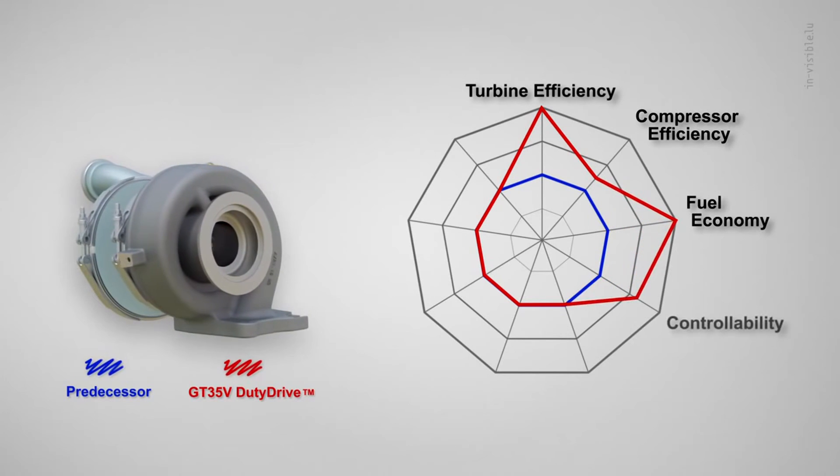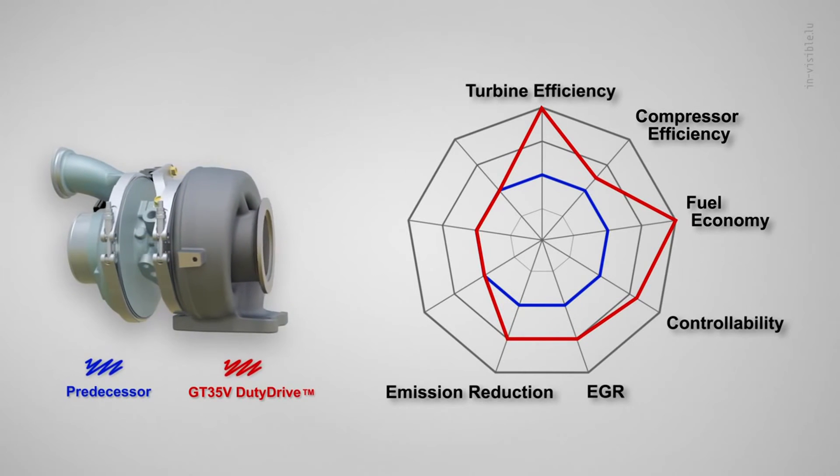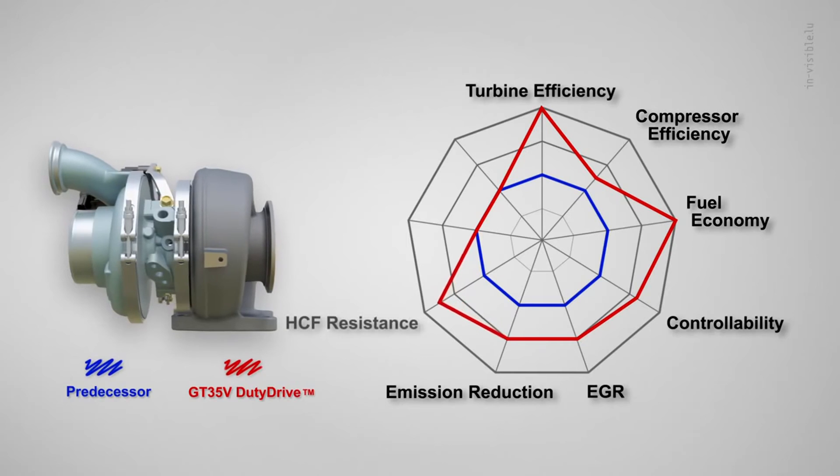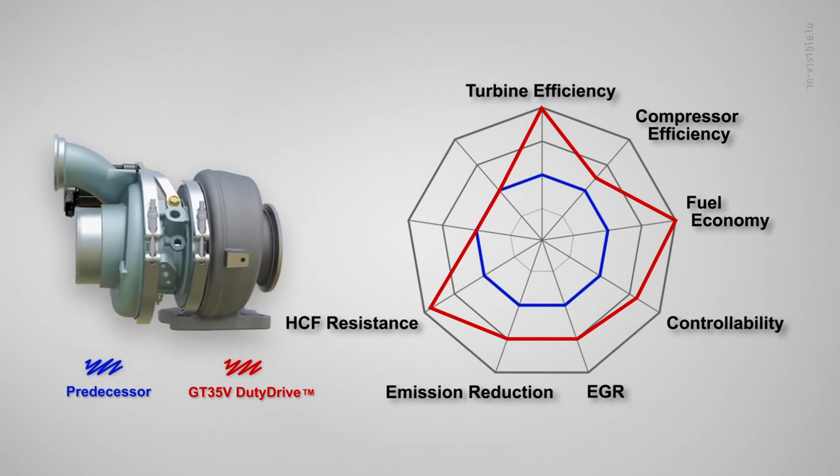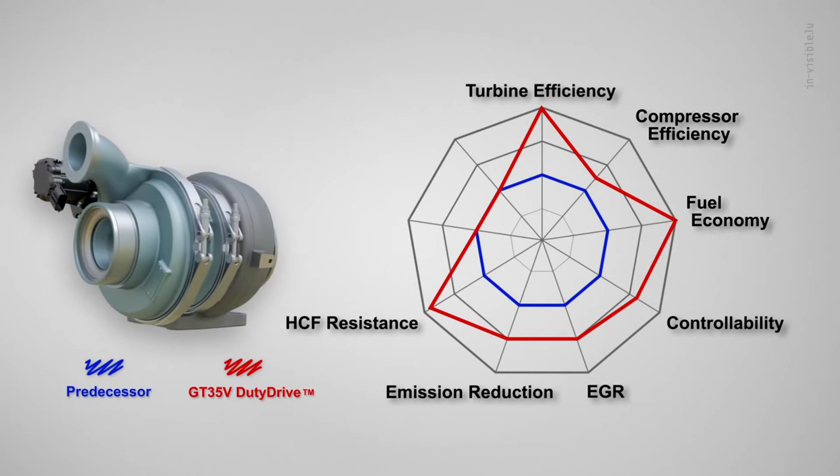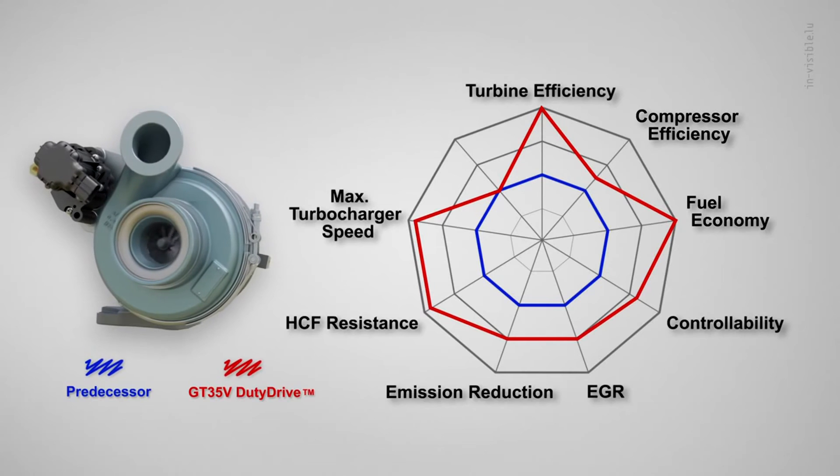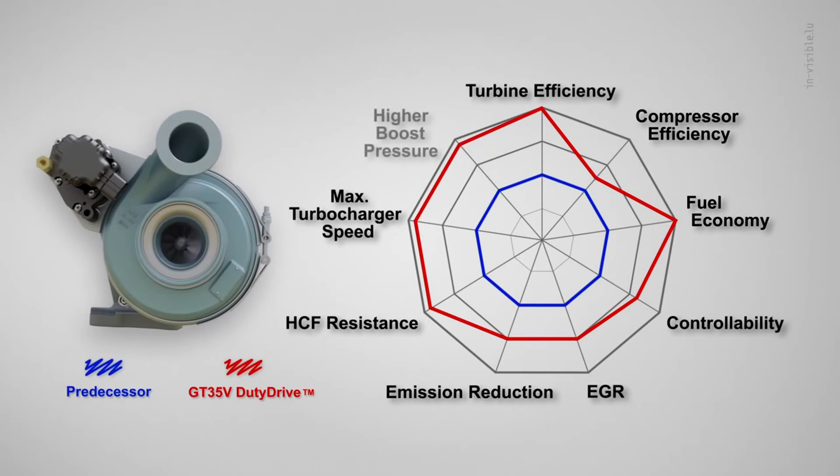Its improved controllability aids EGR and emission control while the 3D vane design strengthens its resistance to HCF considerably. The combination of the new aero and HCF resistance also increases the maximum allowable speed by nearly 20 percent, allowing OEs to run higher rated boost pressures.